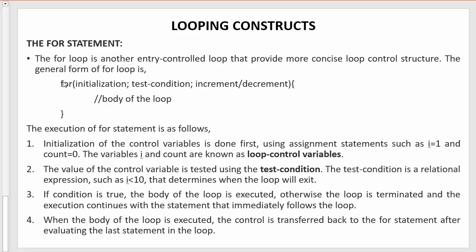First, initialization of the control variable is done using assignment statements such as i equals 1 or count equals 0. Whenever we use a for loop we first initialize the control variable to some specific value. This initialization part is where we assign a value to the control variable. The variables i and count are known as loop control variables.